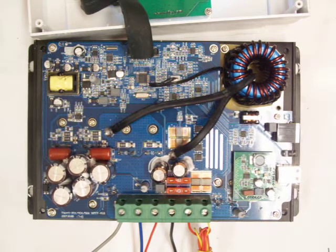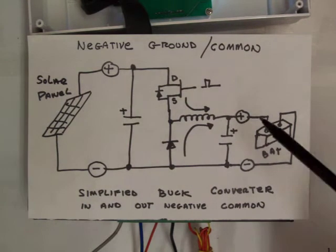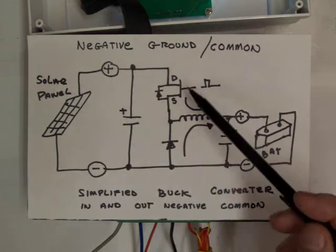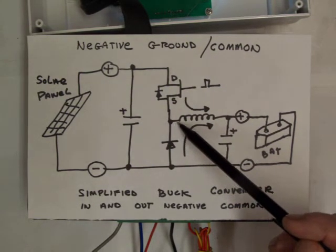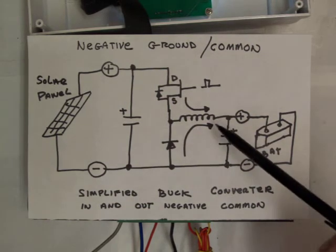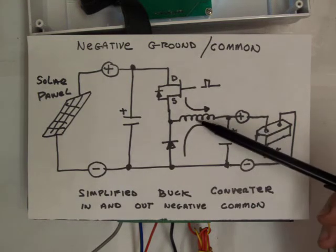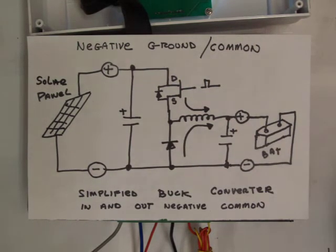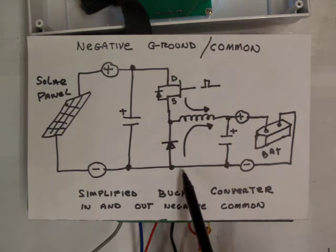So let's talk about positive and negative ground. This is a simplified buck converter that you'll see commonly. You'll have a solar panel, you'll charge up the capacitor, you'll pulse this FET and what happens when the FET turns on, you put current through this inductor. It takes a while for it to build up and at a prescribed time by the regulator it'll turn off. When it turns off it's got this stored energy and that stored energy goes through this diode here and that's how you charge your battery. And if you look, the input negative and the output negative are basically connected together.